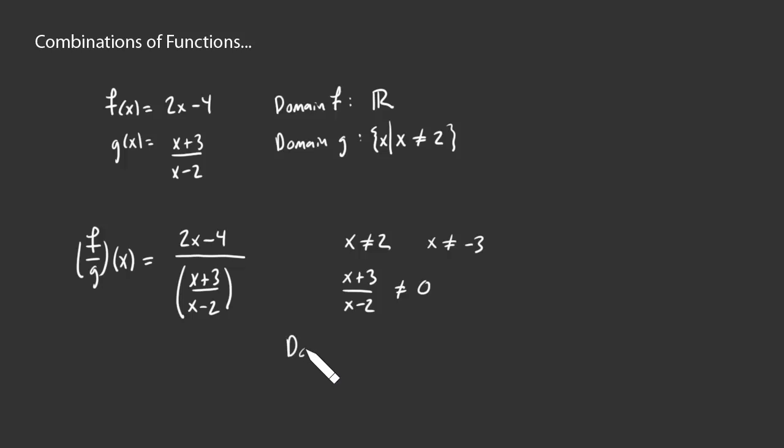So the domain here, the domain of f/g, is the set of all x such that x is not equal to 2 or negative 3. Here again, look what happens if you try to simplify this. (2x-4)/1, if you will, divided by this fraction is the same as multiplying by the reciprocal, multiplying by (x-2)/(x+3). Do you see now, when we put these two things together, that the only denominator you have is going to be x+3, and so x equals negative 3 is the only problem for this expression? So when you're finding the domain, find it before any simplifications at all.